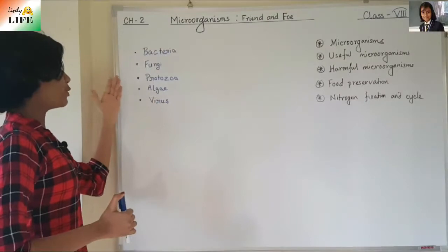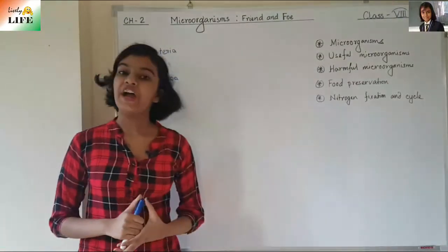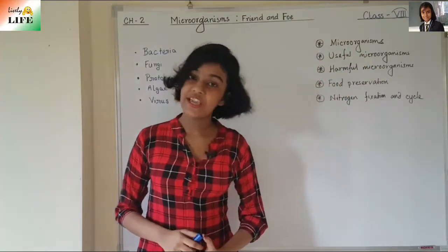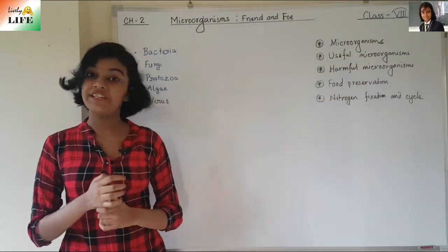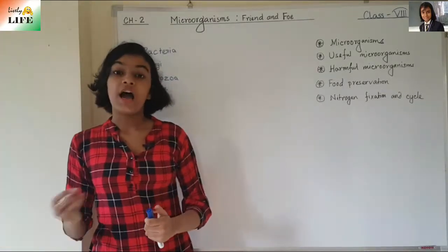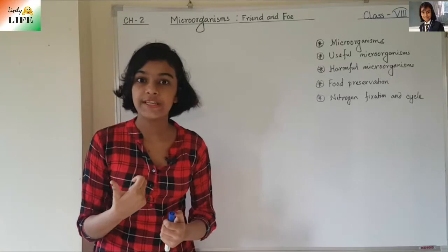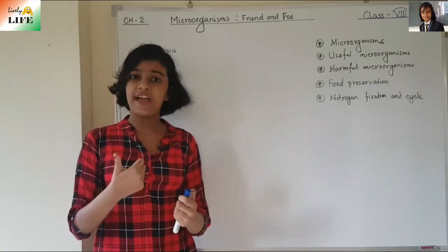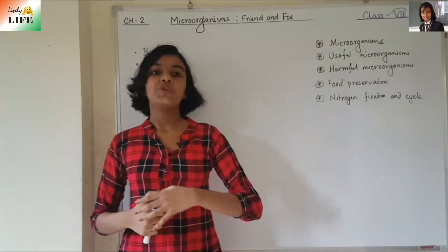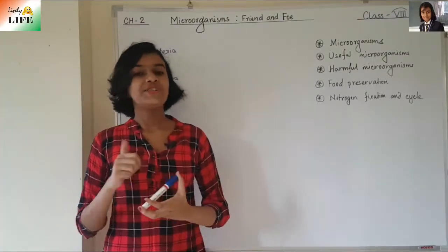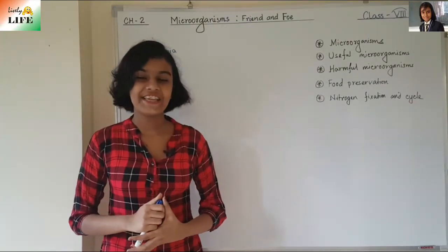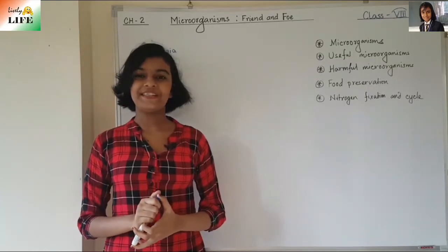So those were the five main types of microorganisms: bacteria, fungi, protozoa, algae, and viruses. In the next video, we are going to learn about useful microorganisms — how they are useful in our daily life, for example how milk is changed into curd, and what vaccines are and how microorganisms are involved. Stay tuned, and if you like this video, click the like button and subscribe. Thank you.